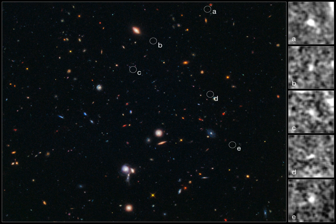Notable galaxy clusters in the relatively nearby universe include the Virgo cluster, Fornax cluster, Hercules cluster, and the Coma cluster. A very large aggregation of galaxies known as the Great Attractor, dominated by the Norma cluster, is massive enough to affect the local expansion of the universe.